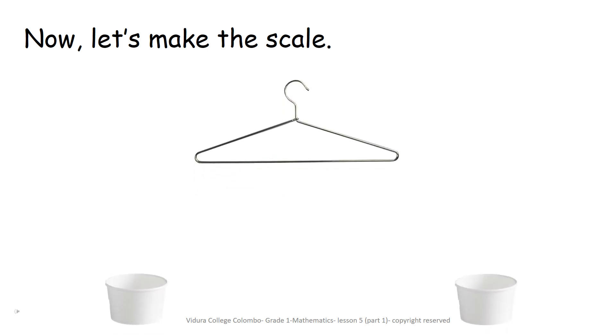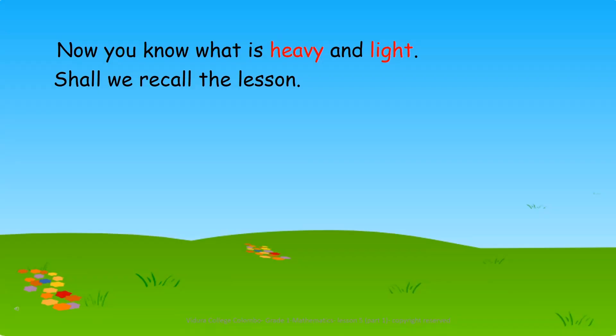Now let's make the scale. Take the hanger and the two yogurt cups. Take twine strings and tie them to the yogurt cups as mentioned in the picture. Then take those tied yogurt cups and tie those on either sides of the hanger as mentioned in the picture. Then you get a homemade, your own scale. Isn't it fun children? Now you know what is heavy and light.